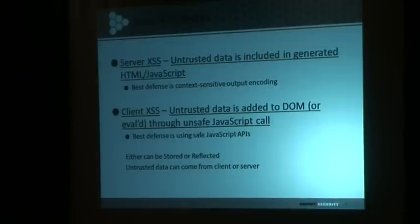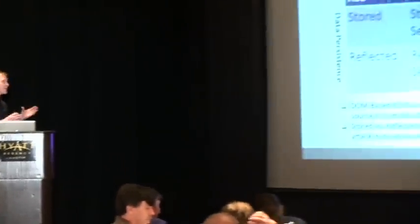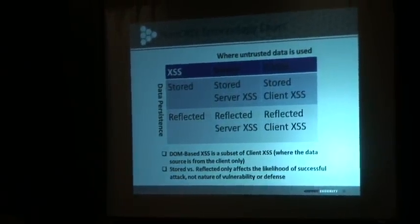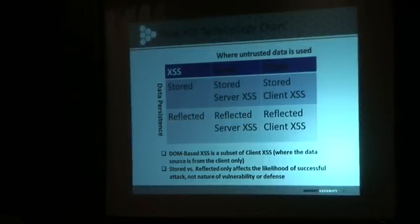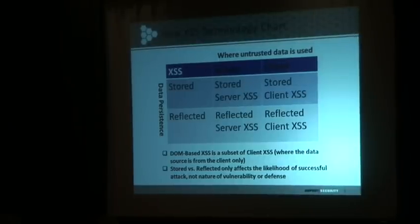Server XSS is kind of what we're used to — a whole page gets served to the browser with some data embedded in it unsafely and we have an XSS problem. You can have stored and reflected server XSS, which is what we're used to, and you can also have stored and reflected client XSS. Client XSS includes DOM-based XSS as a subcategory, but also deals with the situation where the data goes to the server and comes back. This new chart is more organized with no overlapping — with client/server XSS you have stored and reflected as the intersection terms.